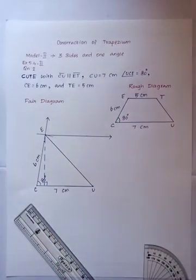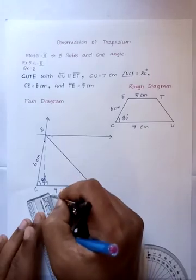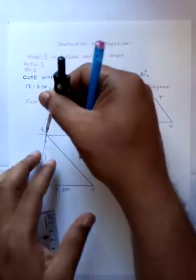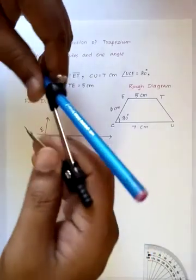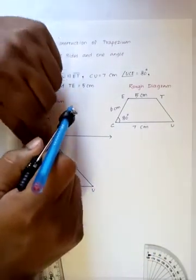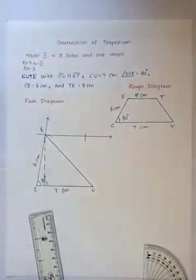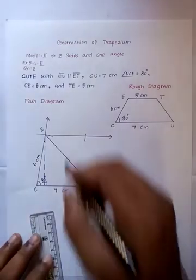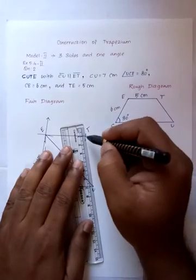Now the value centered, height can be 5 cm distance. So cut point T. The T and U joined.